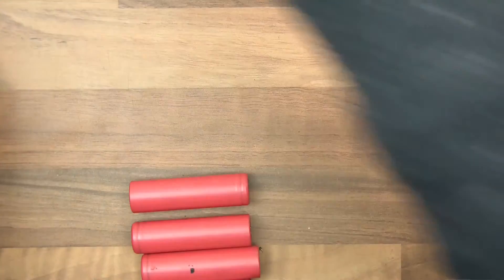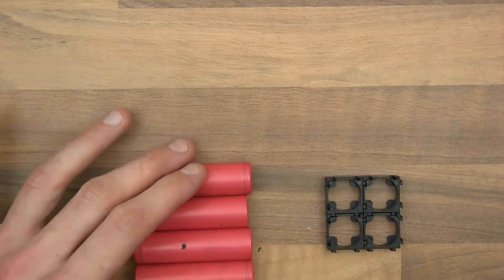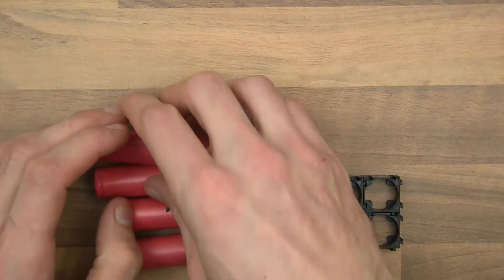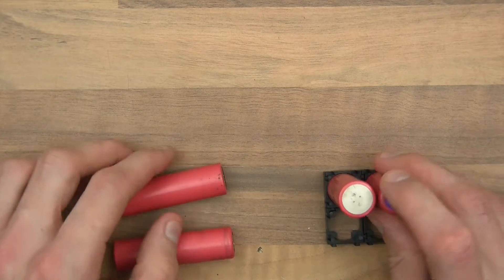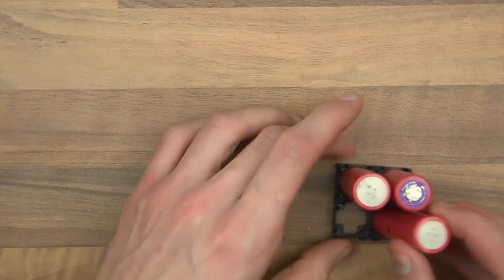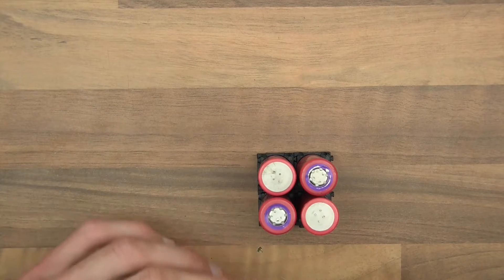So if I wire these in series, it will give me around about 16 volts, which is cool for what I need it for. So that will be cell one, then cell two, then cell three, and then cell four. These are going to be wired in series.